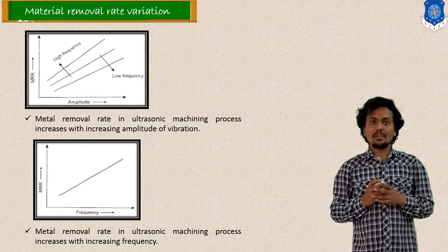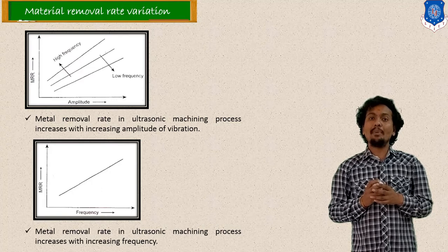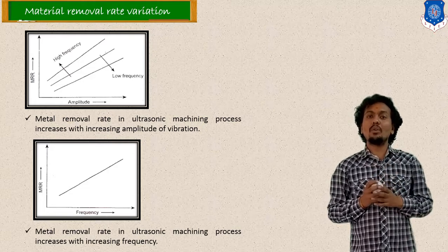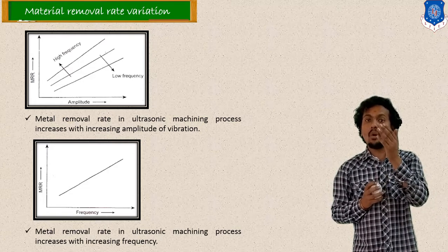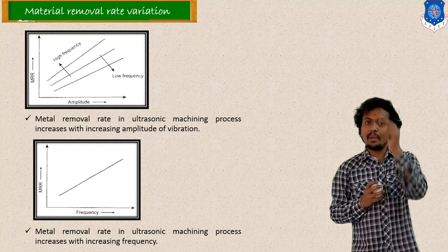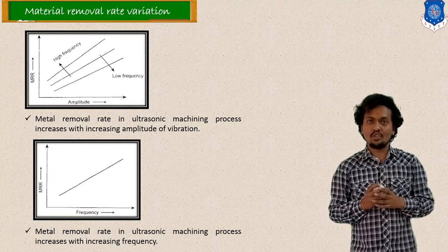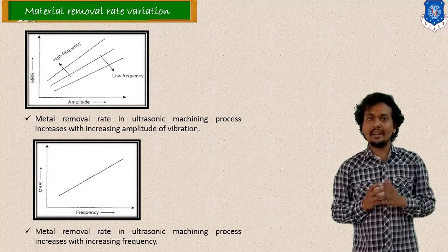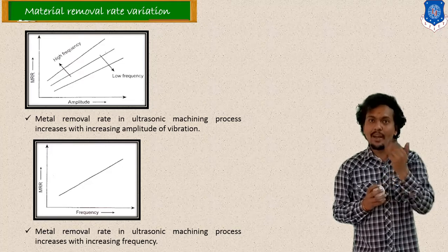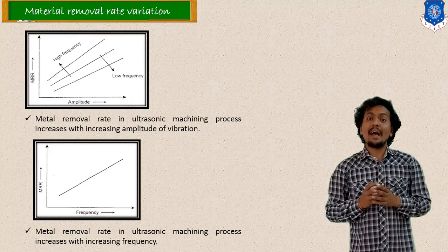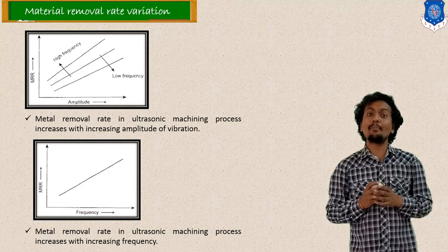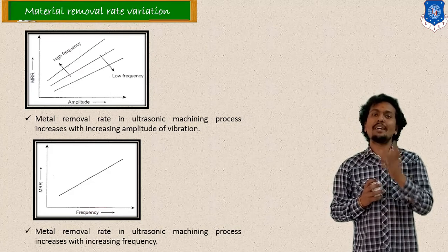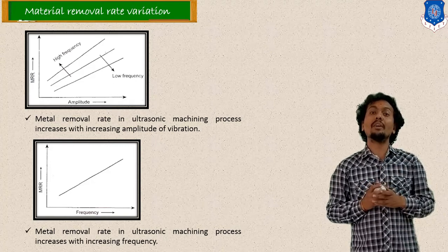After that, here I mentioned the variation with frequency and amplitude. So amplitude is nothing but from the mean or average axis, how much amount of vibration will be below or above your mean line — that is the amplitude of vibration. So as the amplitude increases, your material removal rate will definitely increase. So as the tool vibrates in higher amplitude, your material removal rate will increase. Similarly, as the frequency of vibration will be higher, your material removal rate will be increasing. So with both frequency and amplitude, your material removal rate will be increasing.